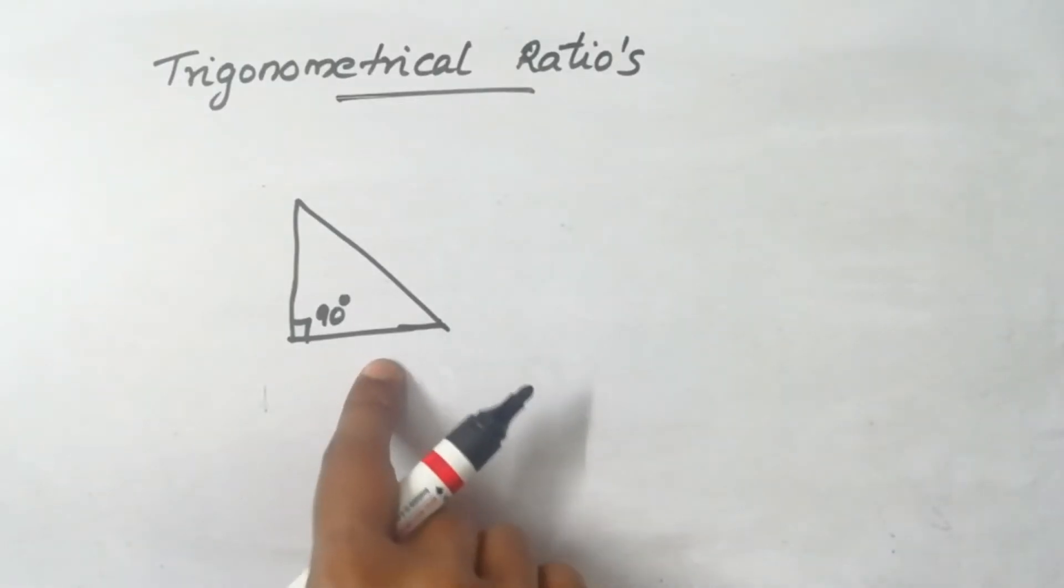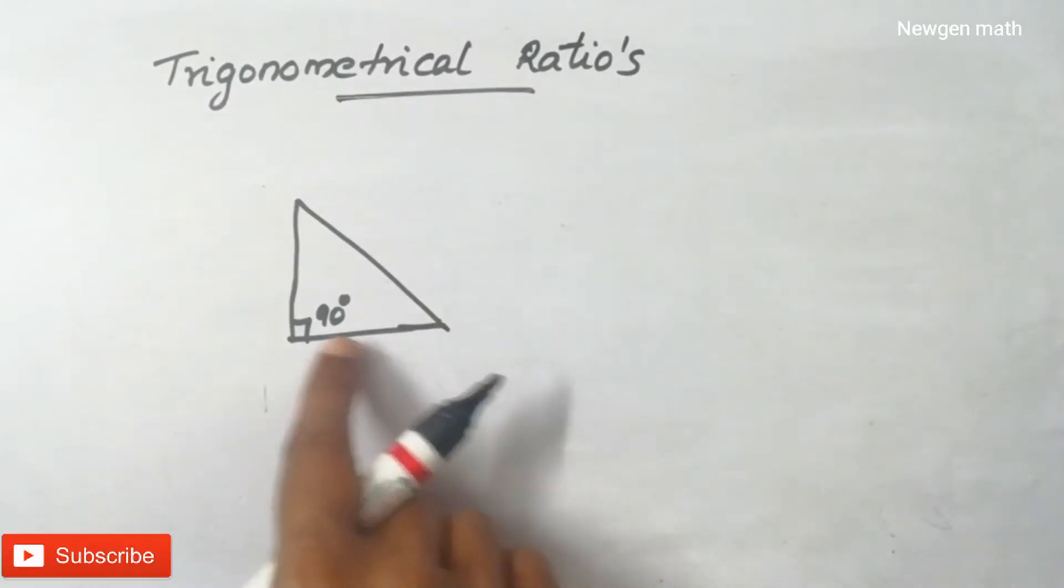There are right angle triangle trigonometry ratios. We've got a right angled triangle. A right angle is 90 degrees.